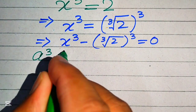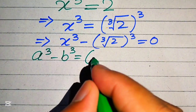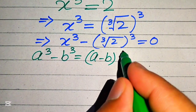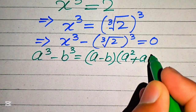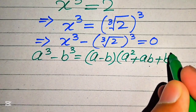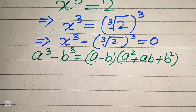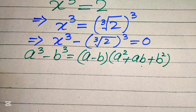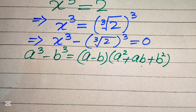The cubic formula states: if we have a cubed minus b cubed, it equals a minus b, times a squared plus ab plus b squared. We will use this formula to factor our equation.